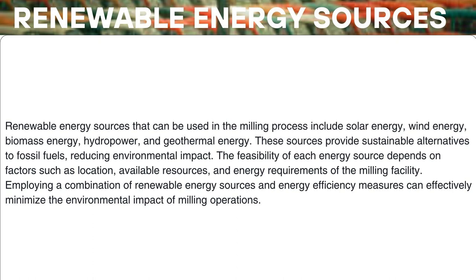3. Biomass energy. Biomass, such as wood chips, agricultural residues, or dedicated energy crops, can be converted into heat or electricity through processes like combustion, gasification, or anaerobic digestion. This renewable energy source can be used to power milling equipment. 4. Hydropower. If a milling facility is located near a river or water source with sufficient flow, hydropower can be harnessed. Turbines driven by flowing water can generate electricity for milling operations. 5. Geothermal energy. In regions with geothermal resources, heat from the Earth's crust can be used to generate electricity or provide direct heat for milling processes. Geothermal power plants utilize steam or hot water reservoirs beneath the surface.